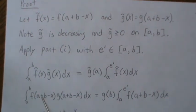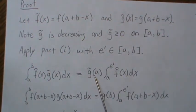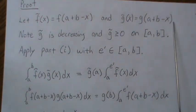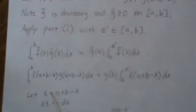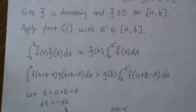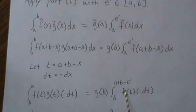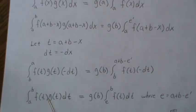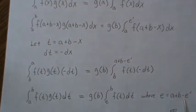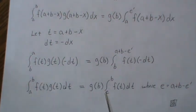Let's write out what F-tilde and G-tilde are. If we stick in A for G-tilde of A, the A's cancel and we get G of B. Then we stick in F-tilde and do a change of variable: let T equal A plus B minus X, take the derivative of both sides, and plug back in. The bounds switch from B to A, but the minus in dT switches them back. This becomes an integral from E to B, where E equals A plus B minus E-tilde. This is exactly what we wanted to show, so Part II is proved.